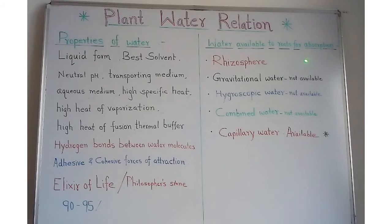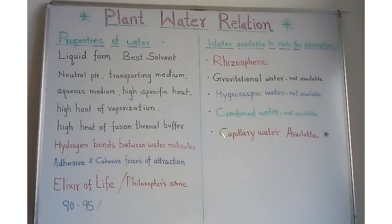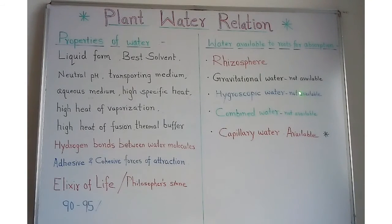Now coming to water available to roots for absorption. Plants absorb water from the soil with the help of roots. Plants absorb water from the rhizosphere, that is the micro-environment surrounding the root. The water present in the soil occurs in different forms, and the only available water is capillary water, which is absorbed by the roots of the plant.